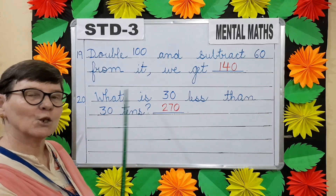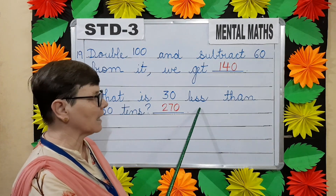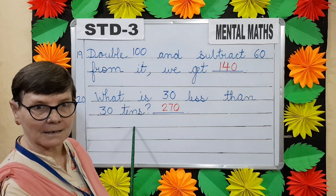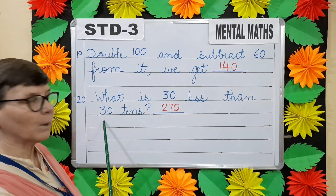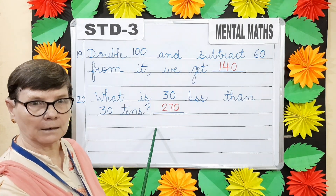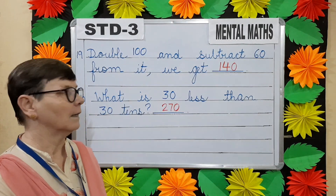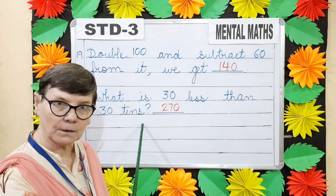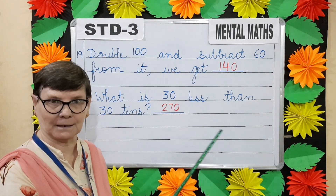Question number twenty. What is thirty less than thirty tens? Less means subtract. First we will do thirty into ten, which gives you three hundred. Subtract thirty from three hundred — you will get two hundred and seventy.